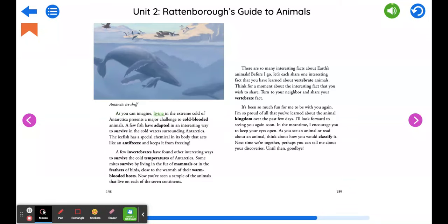They are the primary or main source of food for the predators of Antarctica. As you can imagine, living in the extreme cold of Antarctica presents a major challenge to cold-blooded animals. A few fish have adapted in an interesting way to survive in the cold waters surrounding Antarctica. The ice fish has a special chemical in its body that acts like an antifreeze and keeps it from freezing.